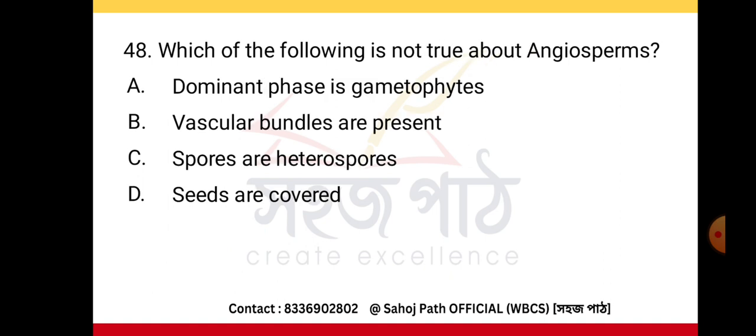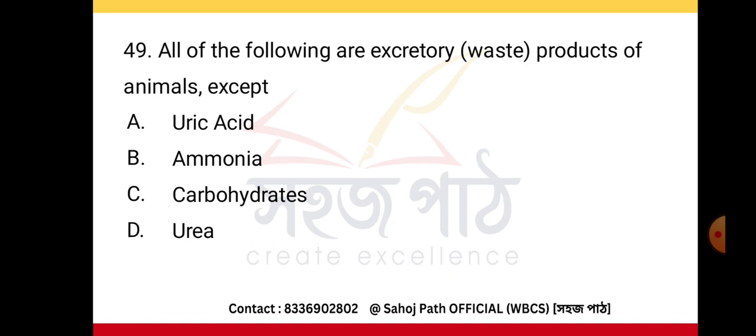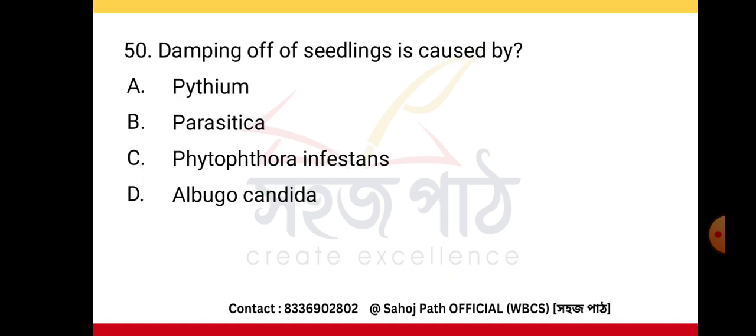Which of the following is not true about angiosperms? The dominant phase is the gametophyte. All of the following are excretory products of animals except carbohydrates. Damping off of seedlings is caused by a fungal pathogen.